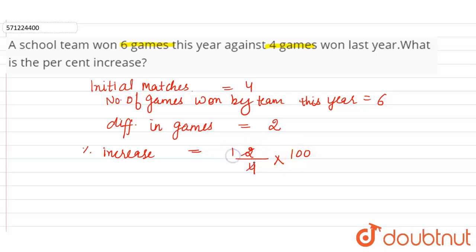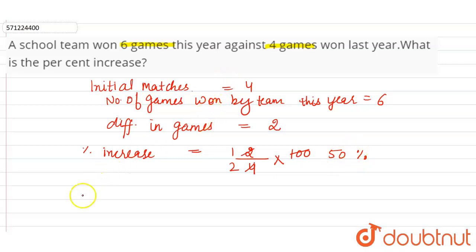So 2 into 50 is 100, giving us 50 percent. The increase in the number of matches won by the team this year is 50 percent.